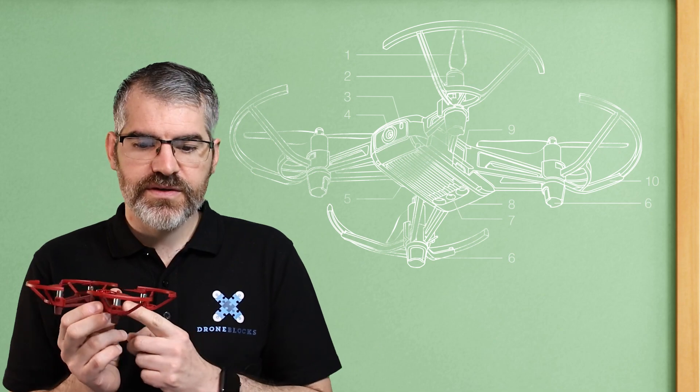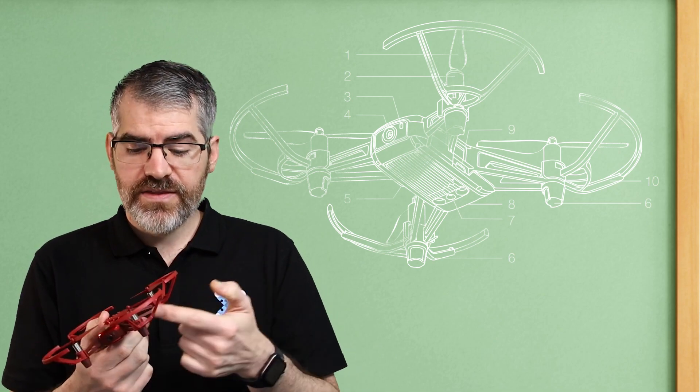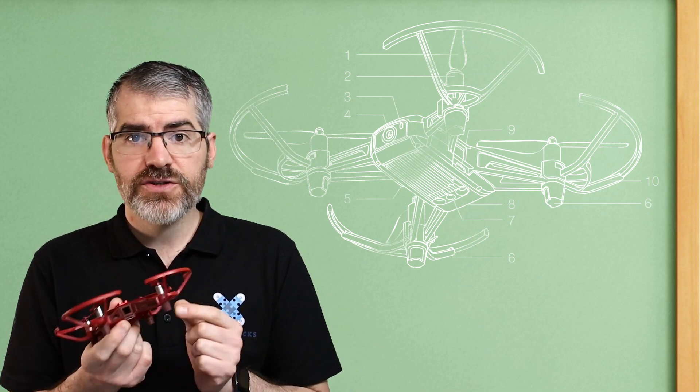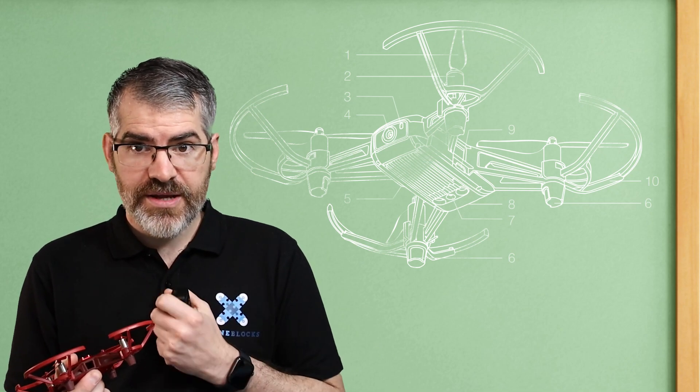Number eight is your battery. It goes in here. Number nine is a micro USB port that you plug in either the controller or your charging cable if you're charging the batteries in the drone instead of using one of these, which we'll talk about in the battery section.